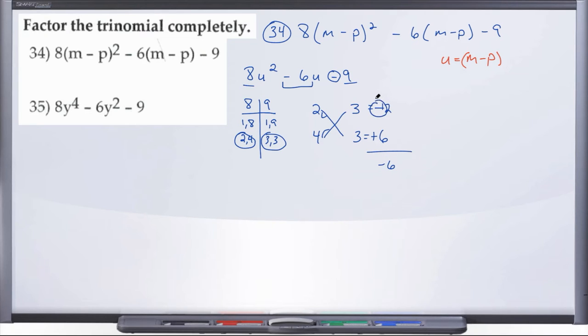And hopefully by now we know that whatever sign we put with the cross product just bounces over. And now we can go ahead and put parentheses around our factors. And now we're going to have 2u minus 3. And here we're going to come up with 4u plus 3.